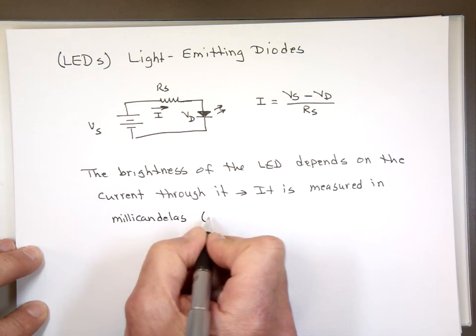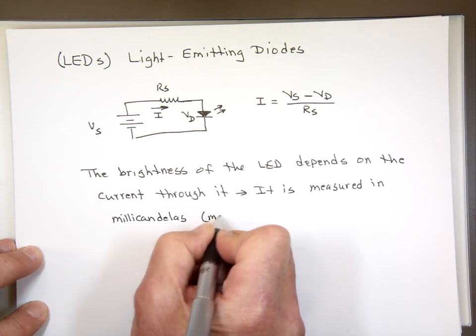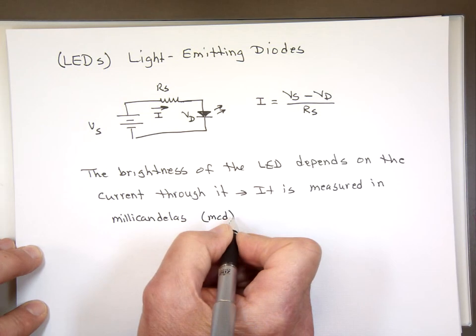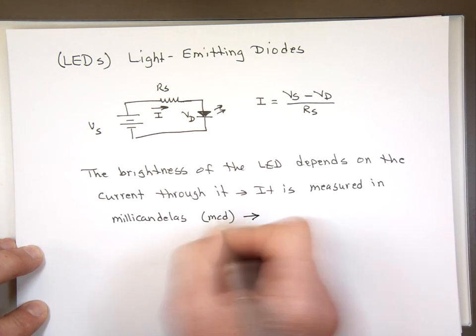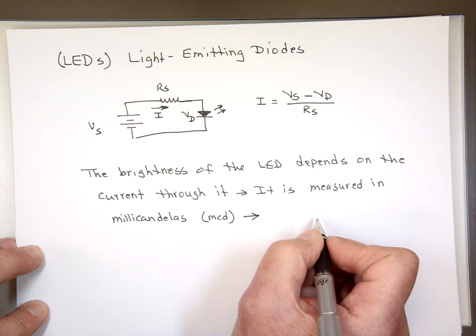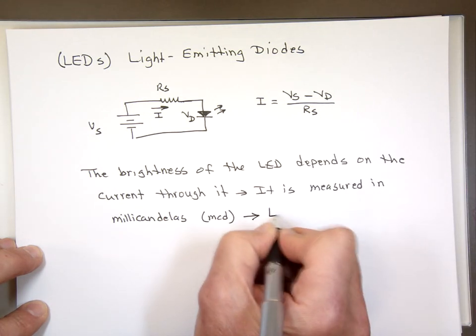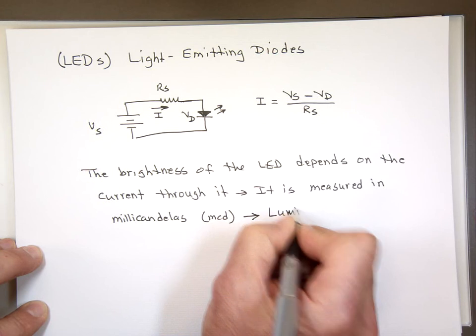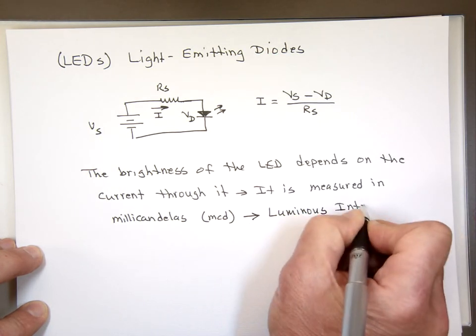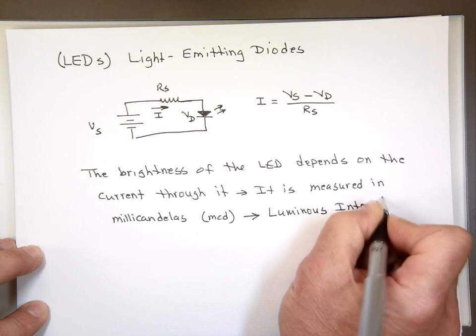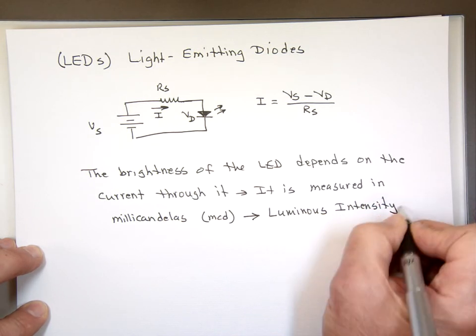And usually it is measured in millicandelas. So when you look at them, usually they have MCD, millicandelas. And that current going through it is called the luminous intensity, which is IV.